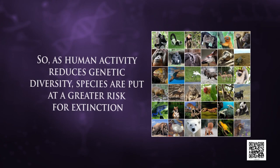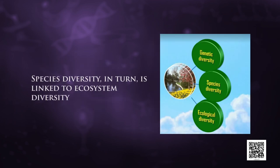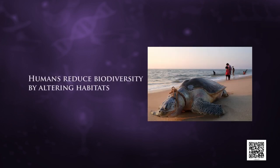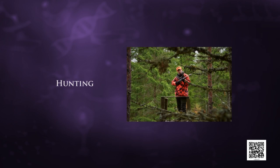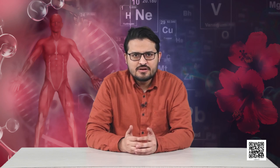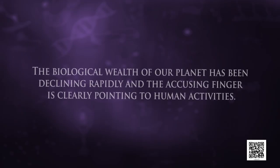Species diversity is related to genetic diversity — the more genetically diverse a species, the greater its chance of surviving disturbances. As human activity reduces genetic diversity, species are put at greater risk of extinction. Species diversity in turn is linked to ecosystem diversity, so as ecosystems are damaged, organisms become more vulnerable to extinction. Humans reduce biodiversity by altering habitats, hunting, introducing invasive species, releasing pollutants into food webs, and contributing to climate change. Biologists compare loss of biodiversity to destroying a library before its books are ever read.